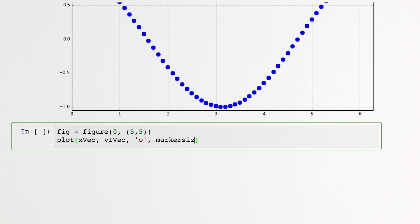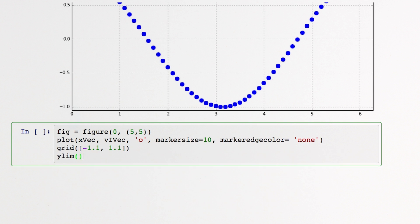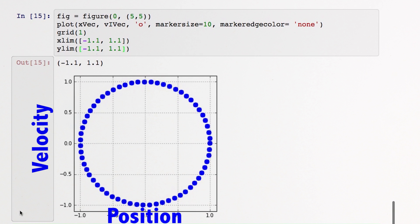But what if we don't plot time at all, and instead plot position versus velocity? When we view our motion this way, we see the relationship between velocity and position are connected by a circle.